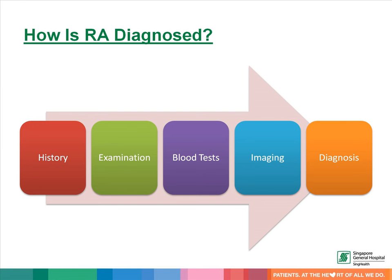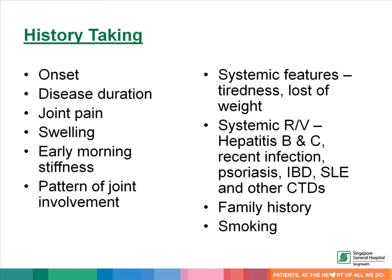Clinically, rheumatoid arthritis can only be diagnosed after a proper history from the patient, performing a physical examination, and ordering some key investigations. During history taking, we should enquire about the onset of symptoms, disease duration, the pattern of joint pain and joint involvement, the presence or absence of swelling, early morning stiffness of the joint, and systemic features of chronic inflammation.